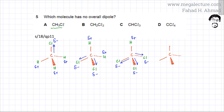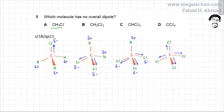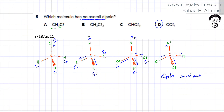Moving to the last molecule, CCl₄, this molecule is going to be completely non-polar because on all four sides there are chlorines. All chlorines try to attract electrons being electronegative, but since the forces of attraction are on opposite sides, the overall force of attraction gets cancelled out. The overall dipoles cancel out, the electrons remain evenly distributed and are not dragged closer to any one side. So option D is the correct answer — it has no overall dipole.